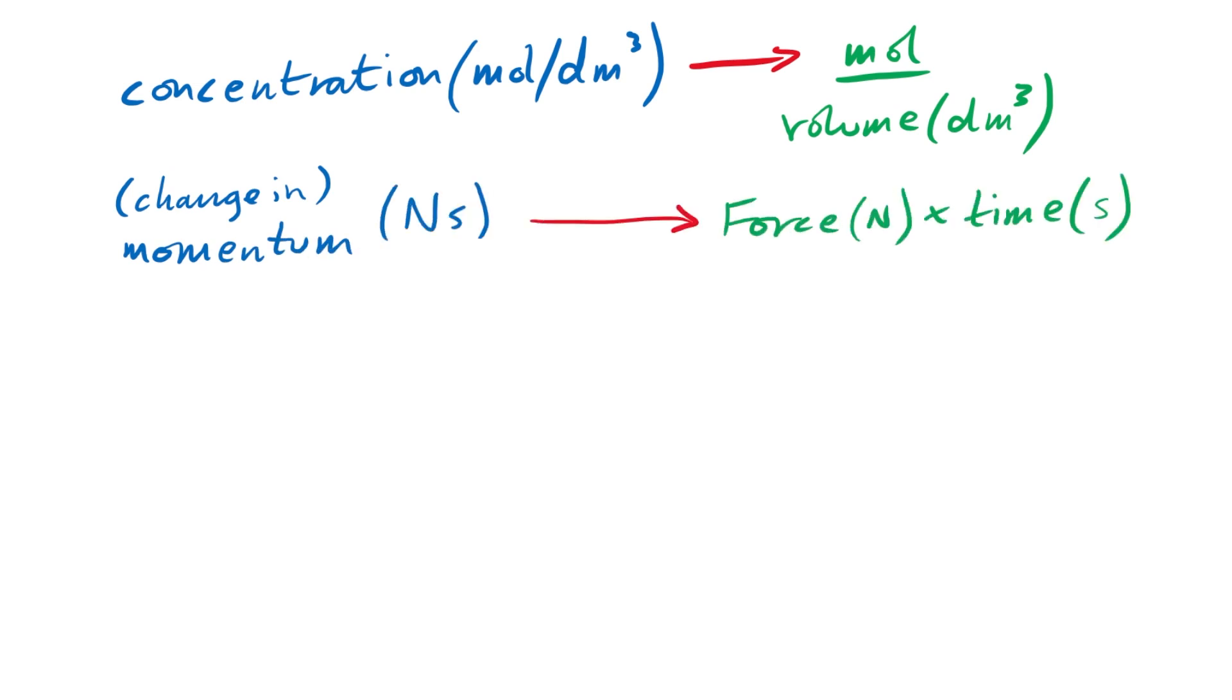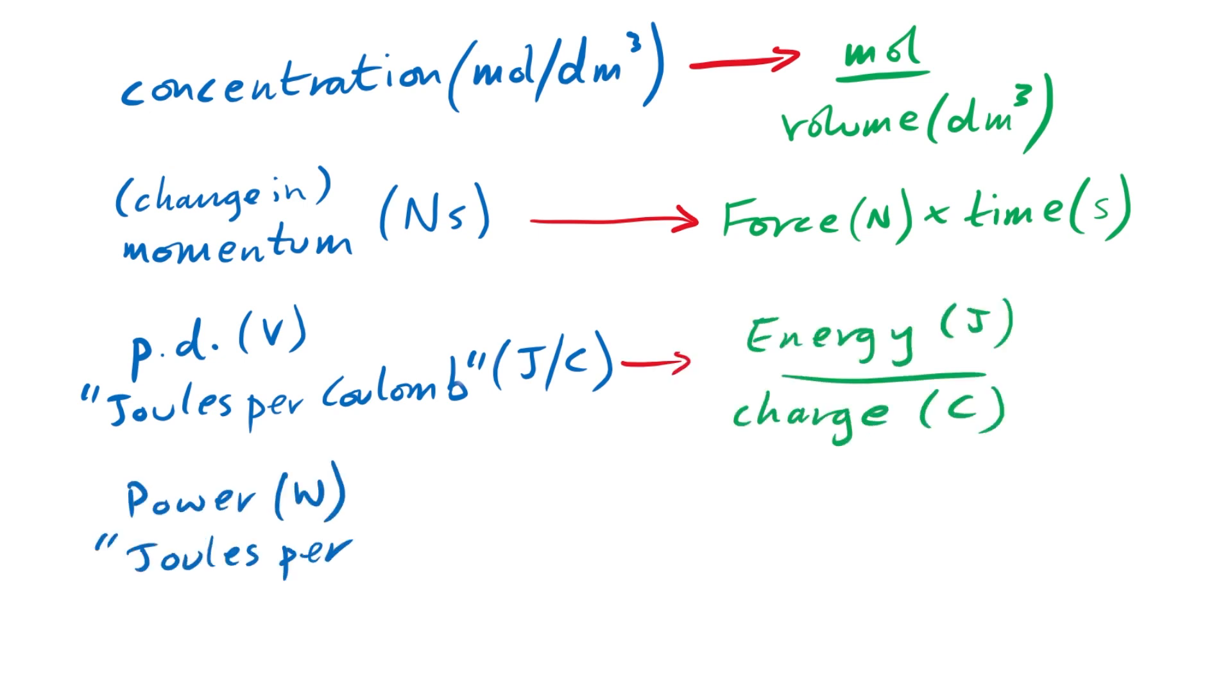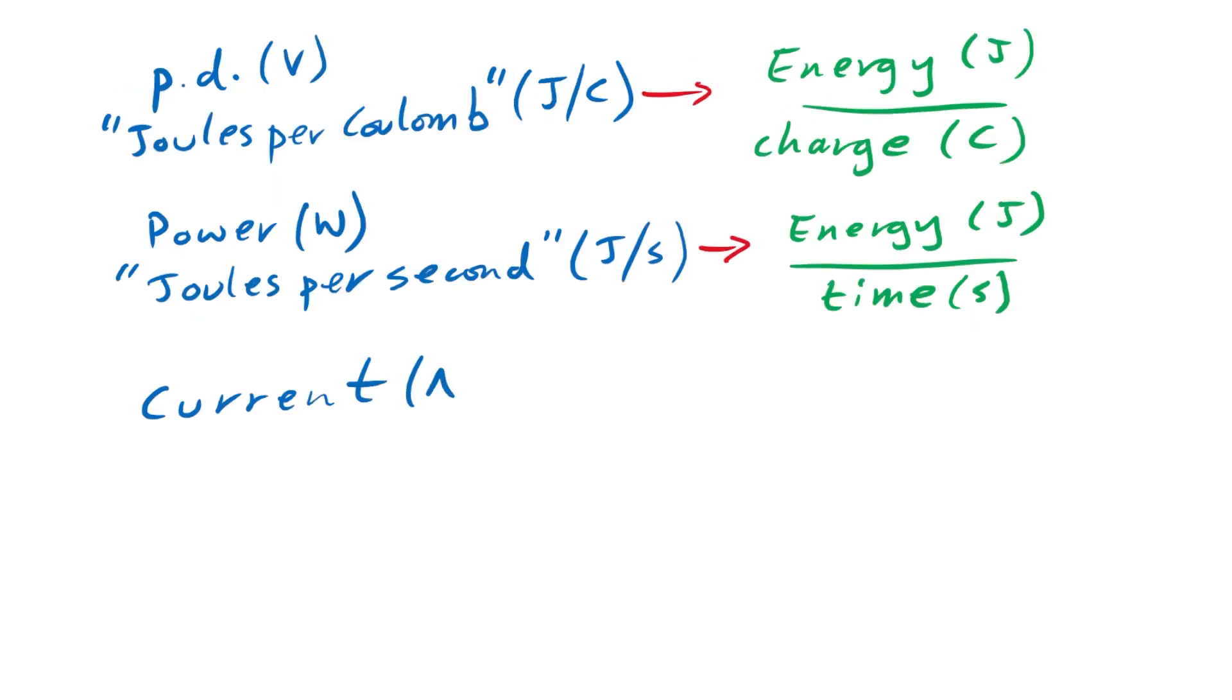But sometimes it's worth remembering what other units mean. Voltage, or PD, is the same thing as joules per coulomb. So that's energy in joules divided by charge in coulombs. Power is joules per second, so energy divided by time. Current is coulombs per second.